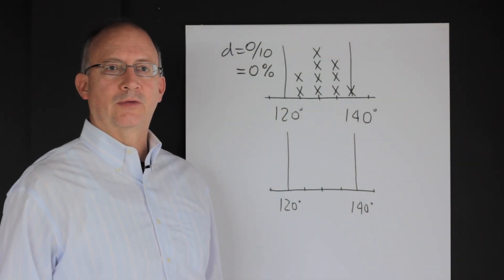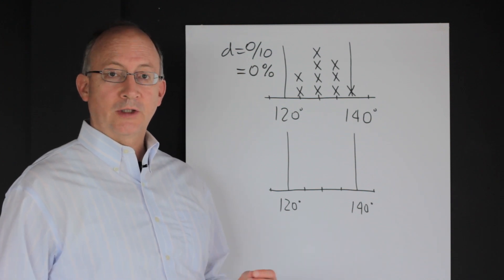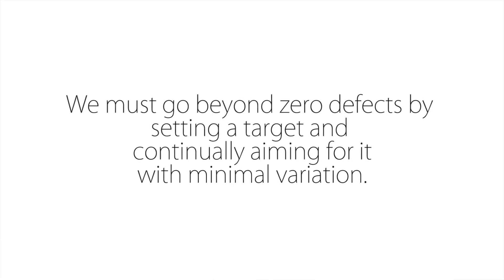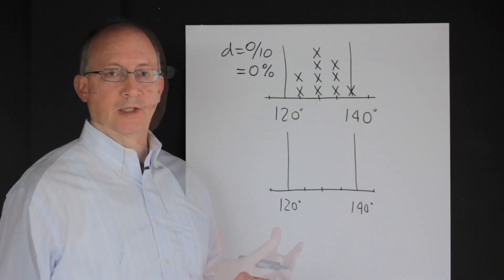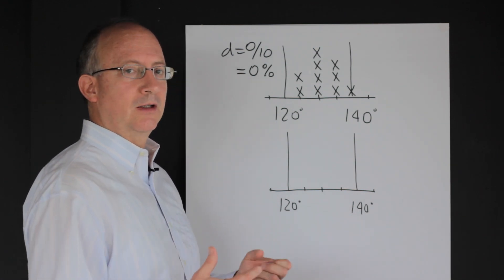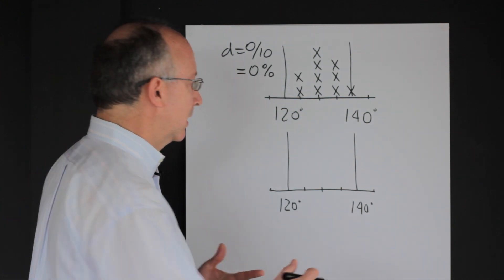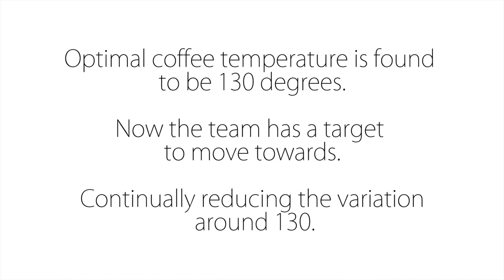Instead of just looking for zero defects, there's a superior view of quality and it is to set a target and continually seek to hit it with minimal variation. This is how this would look like graphically. We're thinking about the target. What is the target that we want? And let's just say, again, through surveys and customer focus groups, we have determined that the desirable temperature really is 130 degrees.